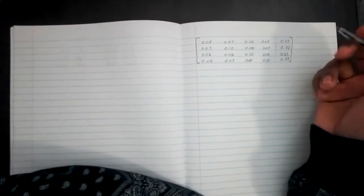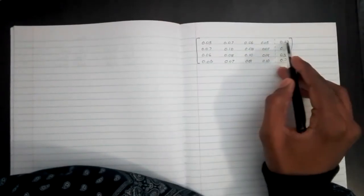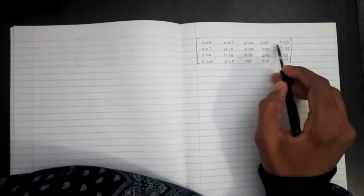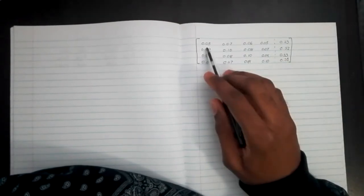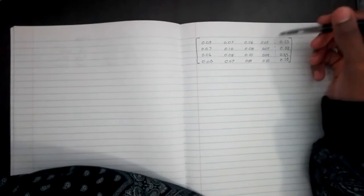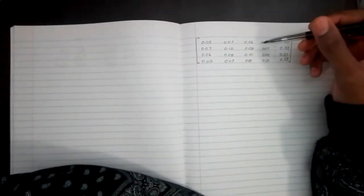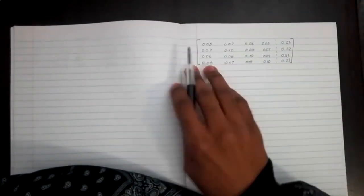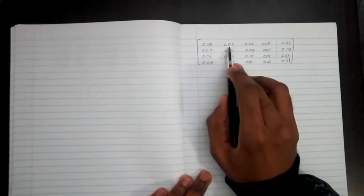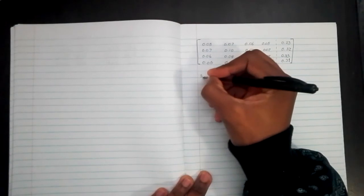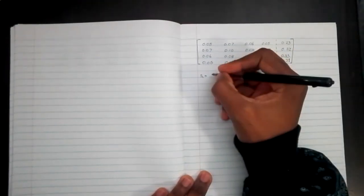Let's take this example and try to solve it using scaled partial pivoting. The first step we need to do is analyze each row. Let's start with the top row and find the highest number within the variable matrix. Here the biggest number is 0.07, and we'll write that as our S1.